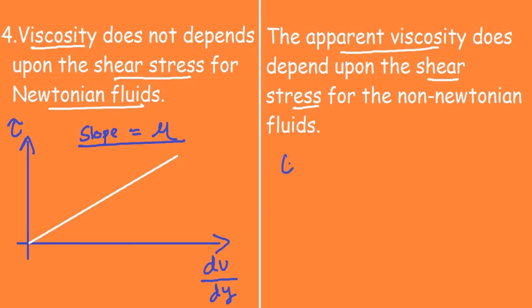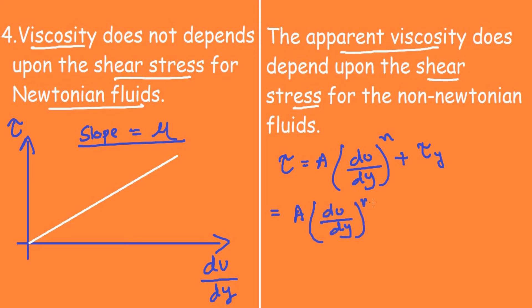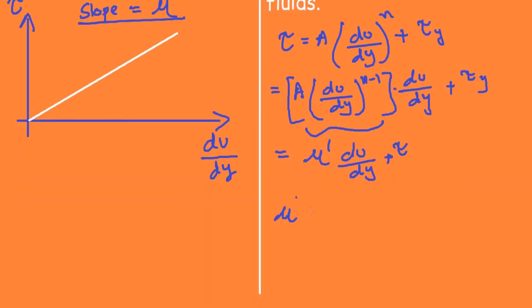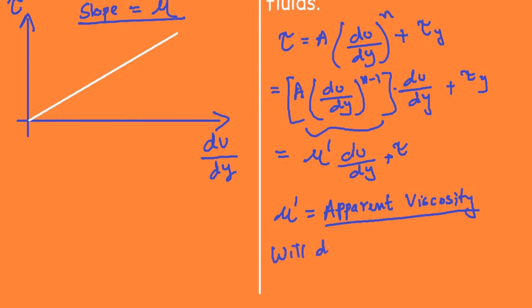The power law of fluid states tau equals a times (du/dy)^n plus tau_y. This can be rearranged as a times (du/dy)^(n-1) times du/dy plus tau_y. The entire term a(du/dy)^(n-1) is written as mu-dash times du/dy plus tau_y, where mu-dash is known as the apparent viscosity. This apparent viscosity depends upon the shear stress.